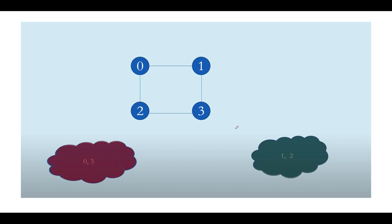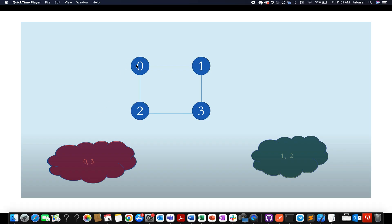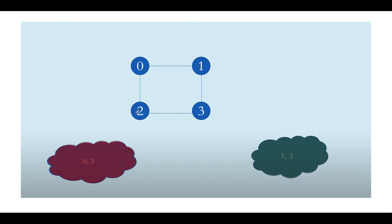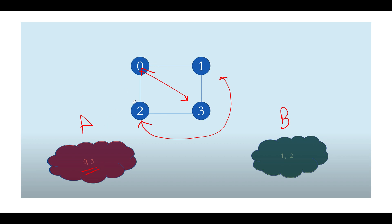Let's walk through an example. Assume we are given a graph where 0 is connected with 1, 1 is connected with 3, 3 is connected with 2, and 2 is connected with 0. Let's ask ourselves whether we can partition this into two independent sets A and B such that every node in A is connected with every node in B. The answer is yes — 0 and 3 can form one group (red), and 2 and 1 can form another group (green). Every node in set A is connected with every node in set B: 0↔1, 0↔2, 3↔1, 3↔2. This segregation is possible.